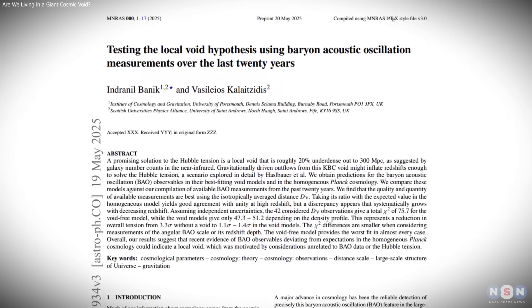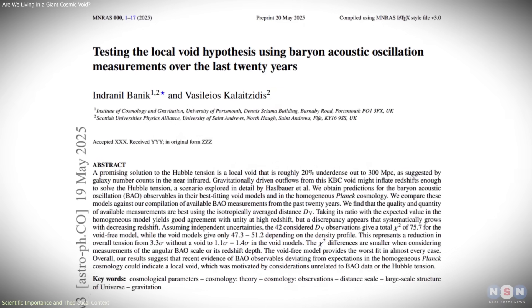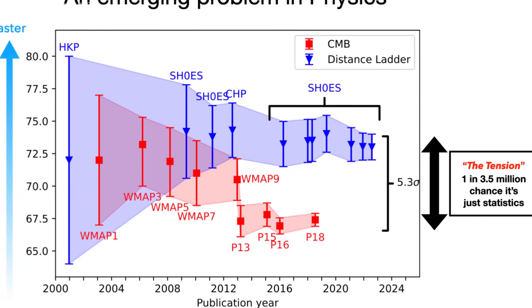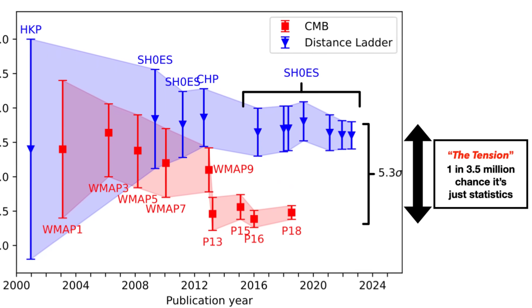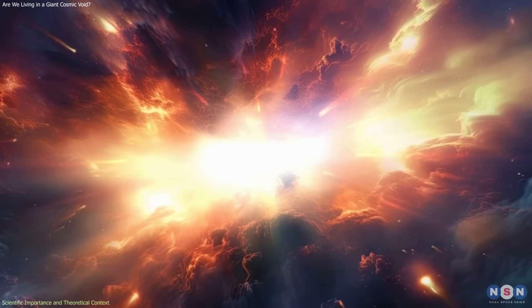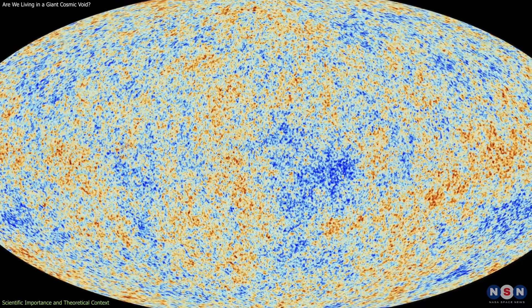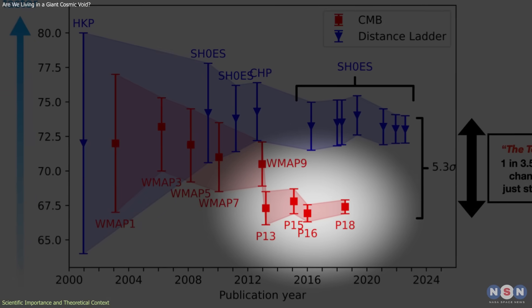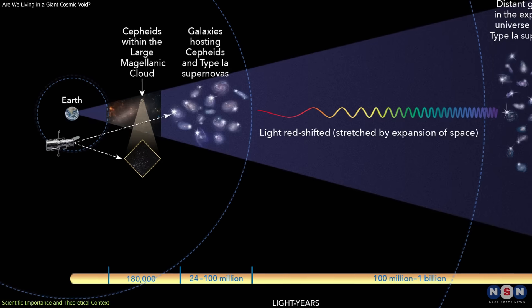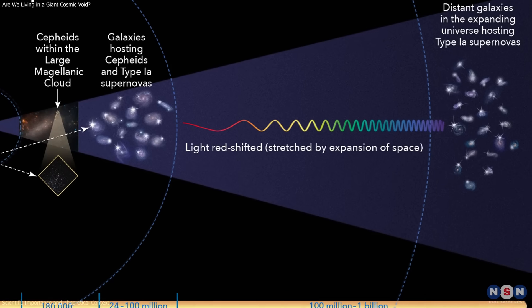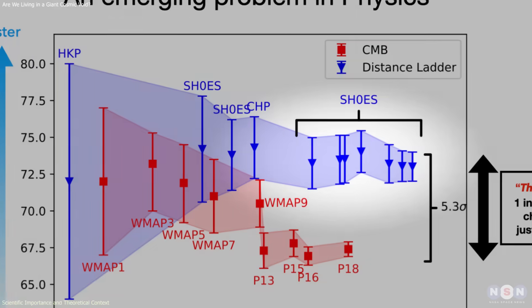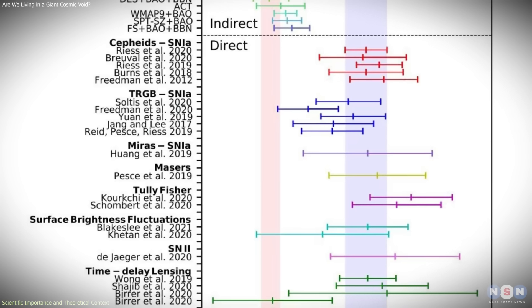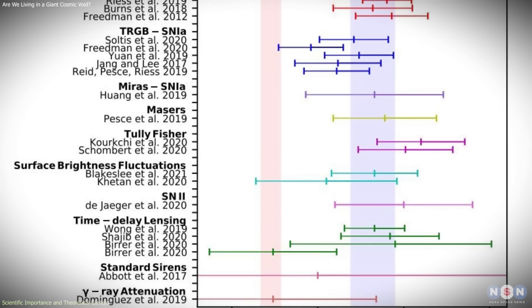The broader importance of these findings becomes clear when placed in the context of the Hubble tension, the long-standing disagreement over how fast the universe is expanding today. Measurements tied to the early universe, particularly those involving the cosmic microwave background, predict a lower present-day expansion rate. In contrast, measurements based on nearby galaxies and supernovae consistently indicate a faster rate. The difference is persistent and has remained despite improvements in observational precision.